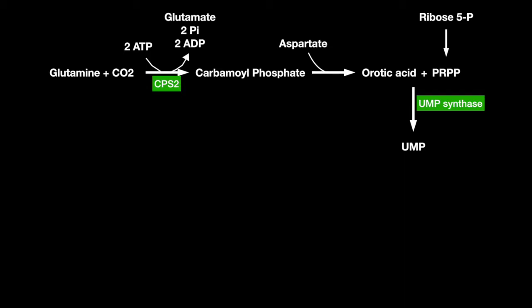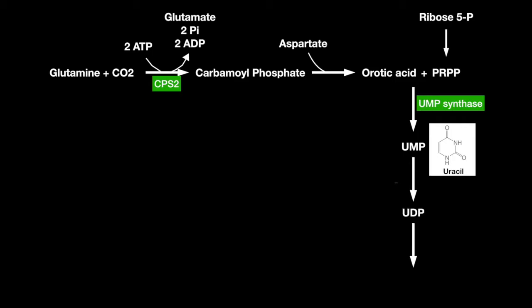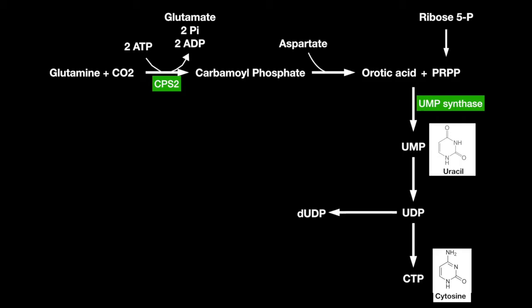UMP can be used as a source for uracil. UMP then becomes UDP, which can later become CTP — a source for cytosine — or deoxy-UDP by ribonucleotide reductase.